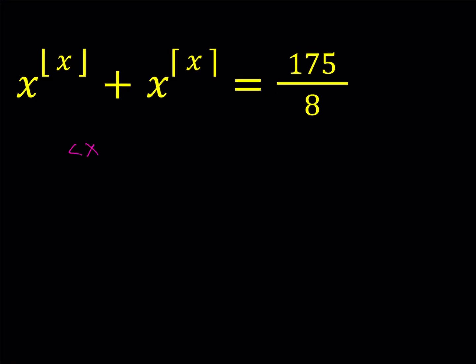So let's start with x is between zero and one. What happens if x is between zero and one? As you know, the floor value is going to be zero. So think about a number like 0.5. So we're going to get something like zero from the floor value and one from the ceiling value. So you're going to get x to the power of zero plus x to the power of one equals 175 over eight.